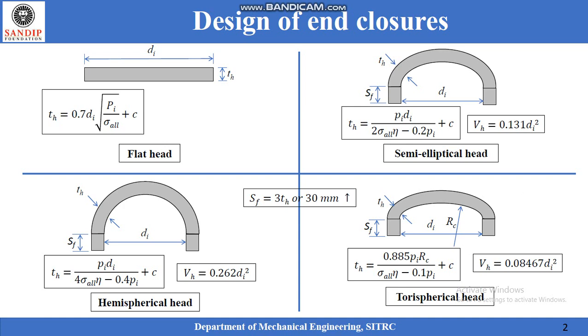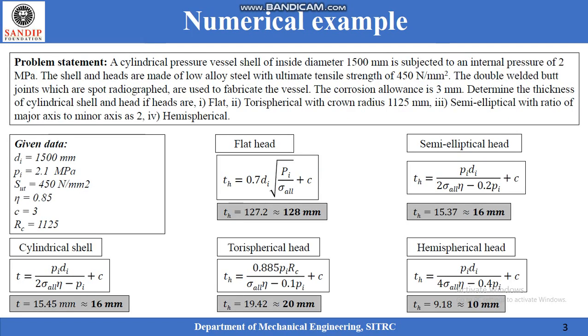The relative advantages and disadvantages can be seen by solving a numerical example. A cylindrical pressure vessel shell of inside diameter 1500 mm is subjected to an internal pressure of 2 MPa. The shell and heads are made of low alloy steel with ultimate tensile strength of 450 N/mm². The double welded butt joints which are spot radiographed are used to fabricate the vessel. The corrosion allowance is 3 mm.